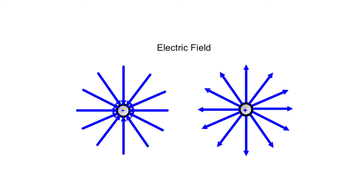Our lesson begins with electric field lines. A great way to test if you have the right direction of the lines is to test a positive charge. What would happen if we put a positive charge there? If the test charge will attract, the electric field lines point toward the charge. If the test charge repels, the lines will point away from the charge.